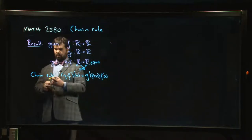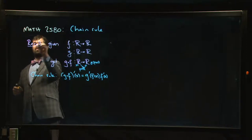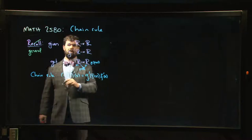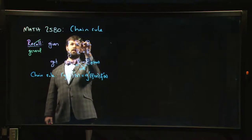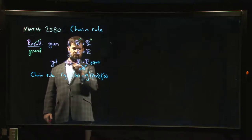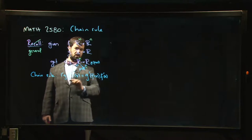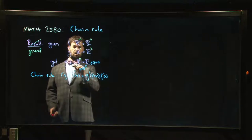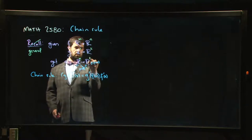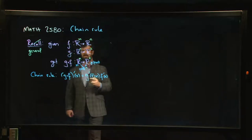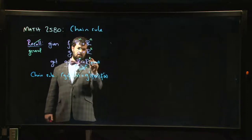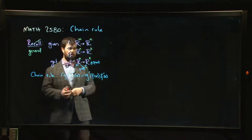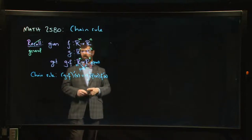Now I want to generalize this. Instead of one-variable functions, suppose f goes from ℝᵐ to ℝⁿ and g goes from ℝⁿ to ℝᵏ. Then the composition goes from ℝᵐ to ℝᵏ. You could try composing in the other order — going from ℝᵏ to ℝᵐ — but you have to be more careful: in higher dimensions the reverse composition might or might not make sense.